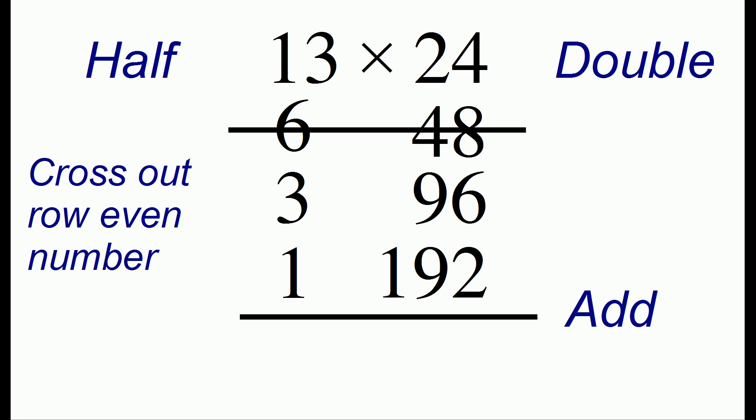The final step is to add the numbers in the right hand column. So we need to add up 24, 96, and 192. And when we do that, we get the result of 312, and that's our answer. 13 times 24 is 312.